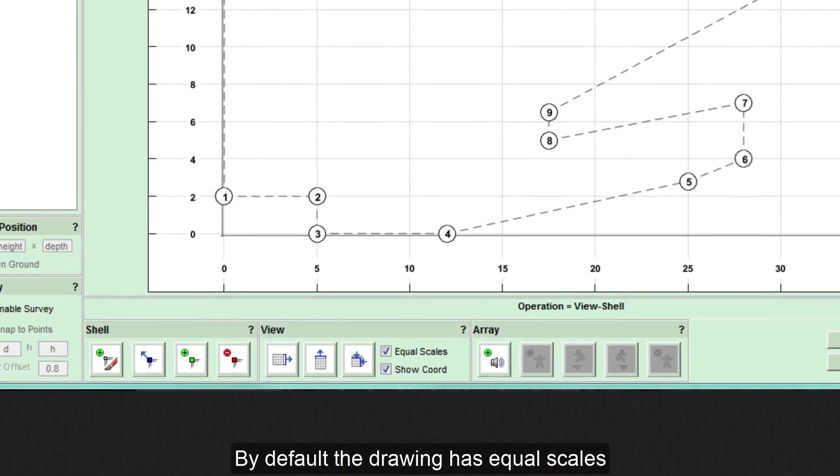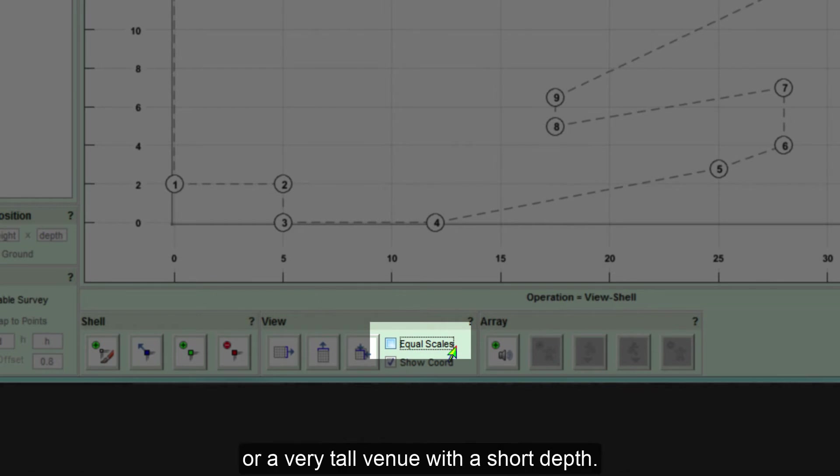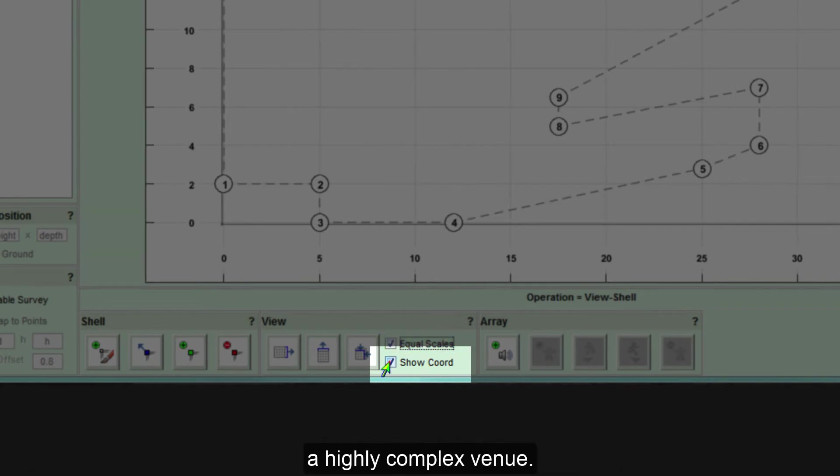By default, the drawing has equal scales for the horizontal and vertical axes. But this can be turned off which may be useful if you have a venue requiring very long coverage but very little height, or a very tall venue with a short depth. All vertices are numbered, but you can switch off the numbers within the drawing, which may make the shell a little clearer if you have drawn a highly complex venue.